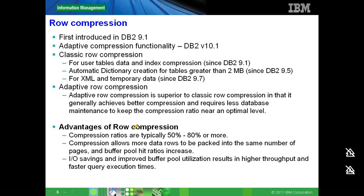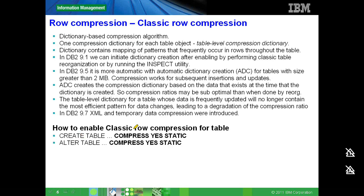If we want to enable classic row compression, we simply have to say CREATE TABLE COMPRESS STATIC. The keyword 'static' needs to be added in DB2 version 10. Before version 10, you simply used COMPRESS YES.